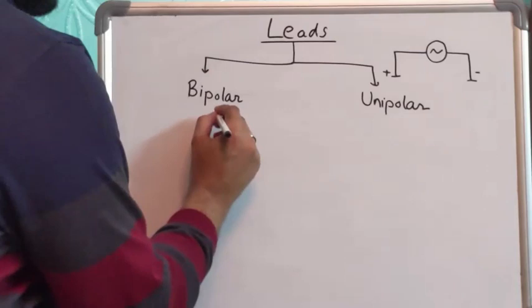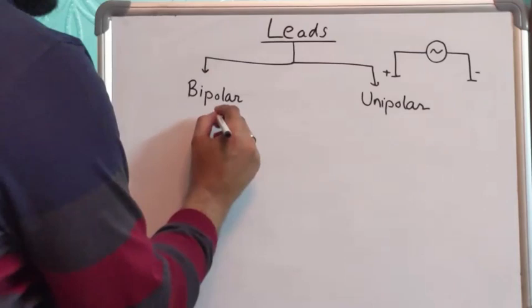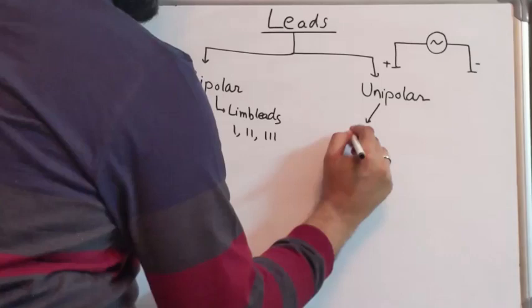Bipolar leads are your limb leads. That is lead 1, lead 2, lead 3.